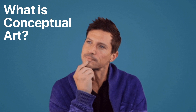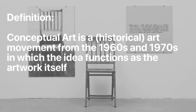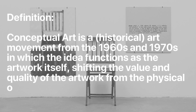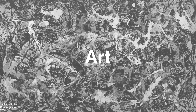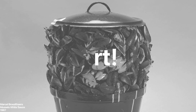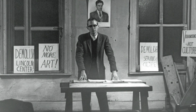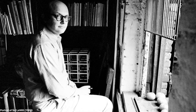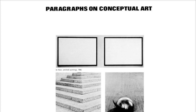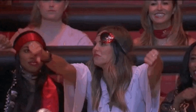Conceptual art is a historical art movement from the 1960s and 1970s in which the idea functions as the artwork itself, shifting the value and quality of the artwork from the physical object to the immaterial concept. The term originated in the 1960s in the United States, as Fluxus artist Henry Flint first wrote about concept art in 1961, discussing art in which language is the main characteristic. This term would soon change to conceptual art, courtesy of Sol LeWitt with his iconic articles Paragraphs on Conceptual Art from 1967 and Sentences on Conceptual Art from 1969.